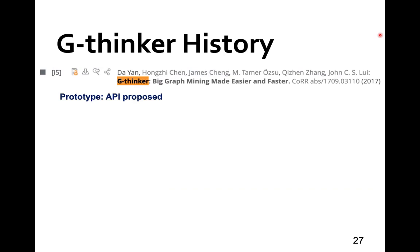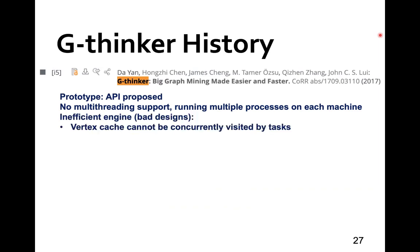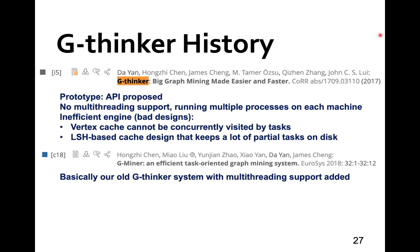Here is a brief history of our G-Synker system. G-Synker was originally a prototype where I proposed a vertex pooling-based subgraph API, but the execution engine was just to make things work, without even multi-threading support. It also had flawed designs — tasks accessed vertices in a bulk-synchronized manner, and to reduce memory overhead subgraphs were saved to disk, but a bad task scheduling strategy left many subgraphs on disk, leading to expensive I/O cost. A student then added multi-threading support and termed the resulting system Gminer, but it inherited all the flawed designs and leads to poor performance when the input graph gets big.